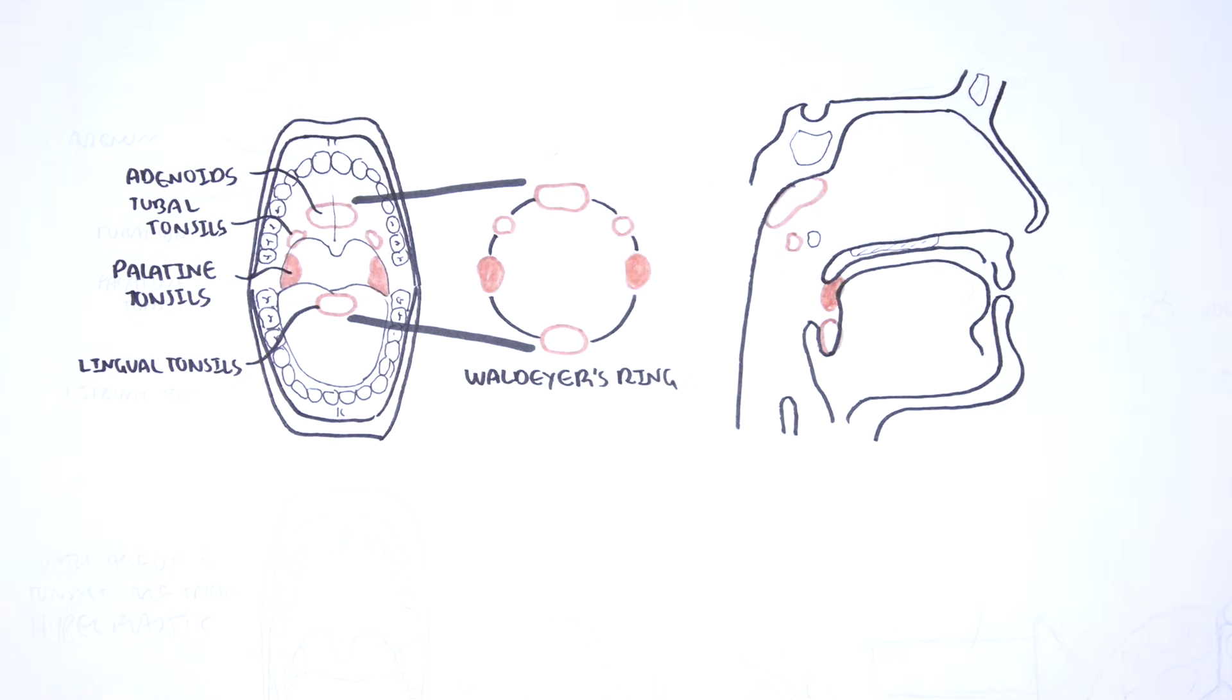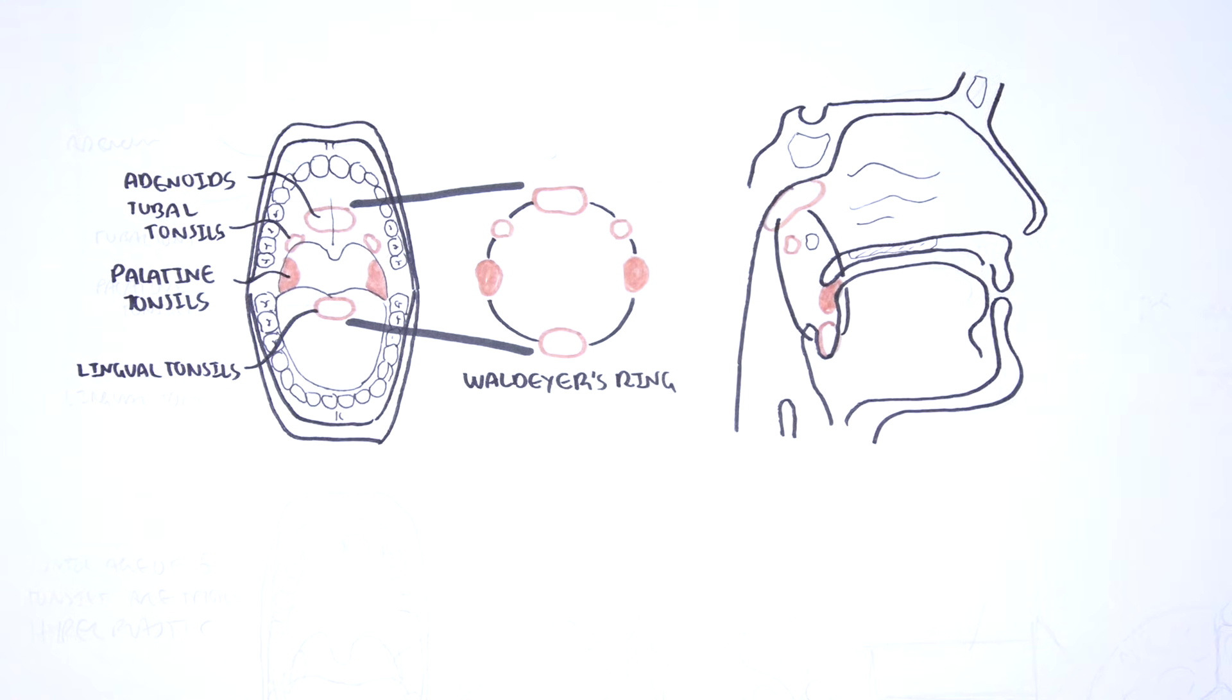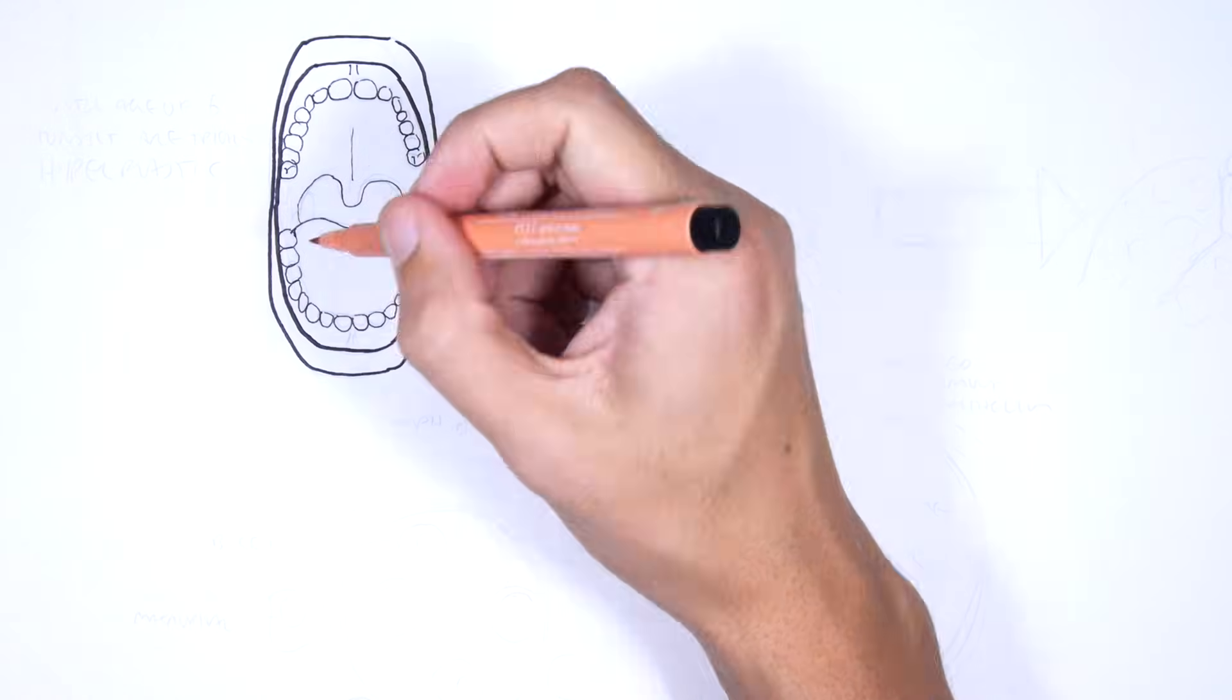The tonsils are a lymphoid organ containing macrophages, T cells, and B cells. The immune cells here are important in learning and building up the immune response. The tonsils are important in the early years of life because the lymphoid tissues containing the immune cells are continuously exposed to many antigens.